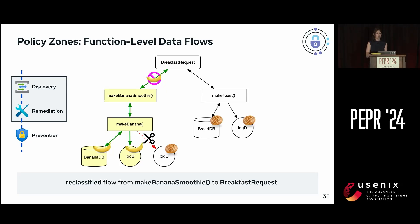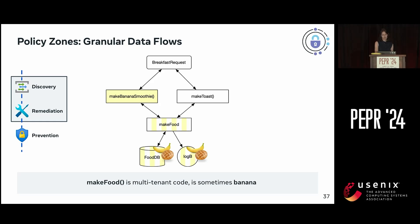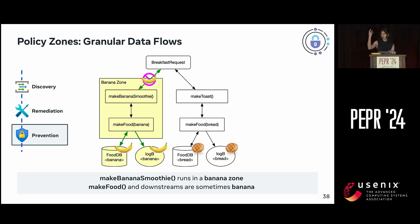Similar to before, we've remediated all violations. What this ends up looking like is that these functions run in a banana zone, and that context is threaded through the stack and propagated down to lower functions. For a quick example of more granular data flows: if we have a make_food common infrastructure that sometimes processes bananas and sometimes processes bread — for making toast and making a banana smoothie — starting a zone on the make_banana_smoothie function will propagate down through the context, and FoodDB will have some rows that are banana and some that are not.